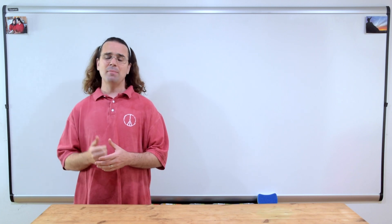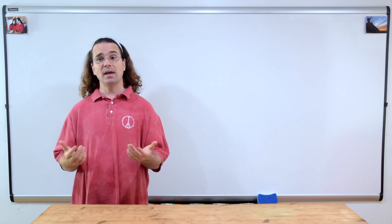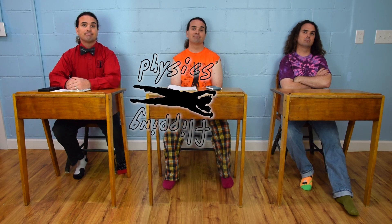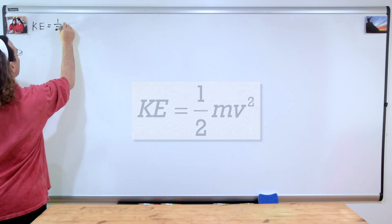Good morning. Bobby, what is the equation for kinetic energy? Flippin' physics! Kinetic energy equals one-half mass times velocity squared.